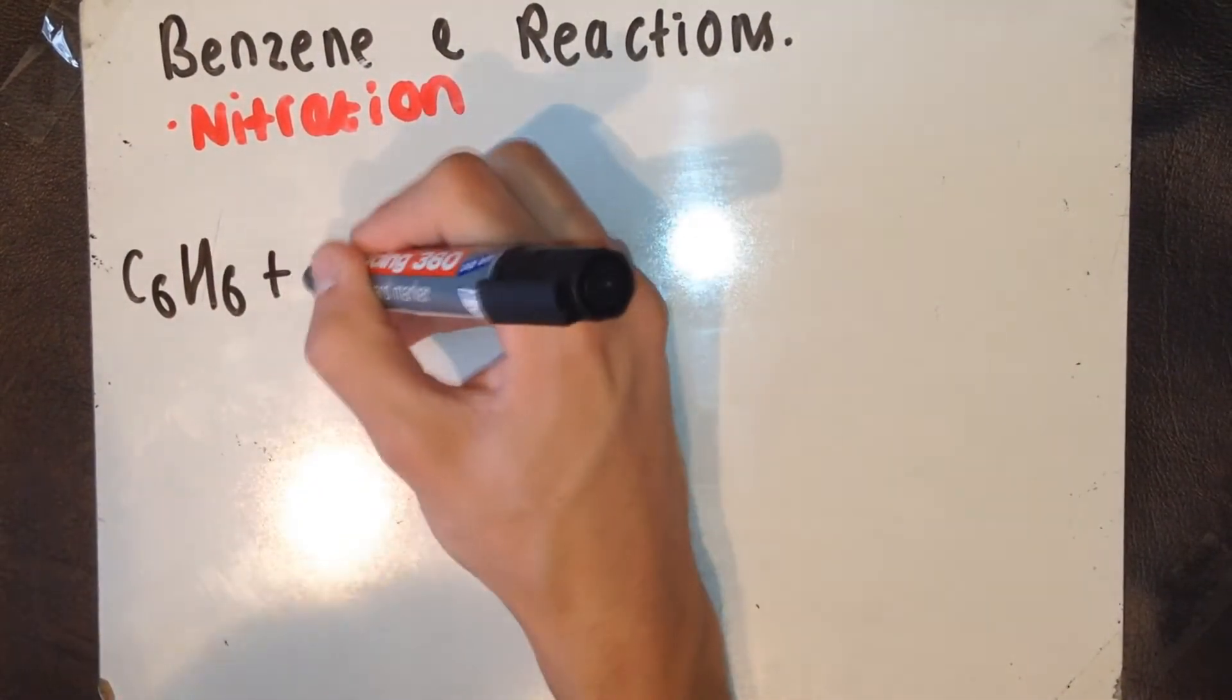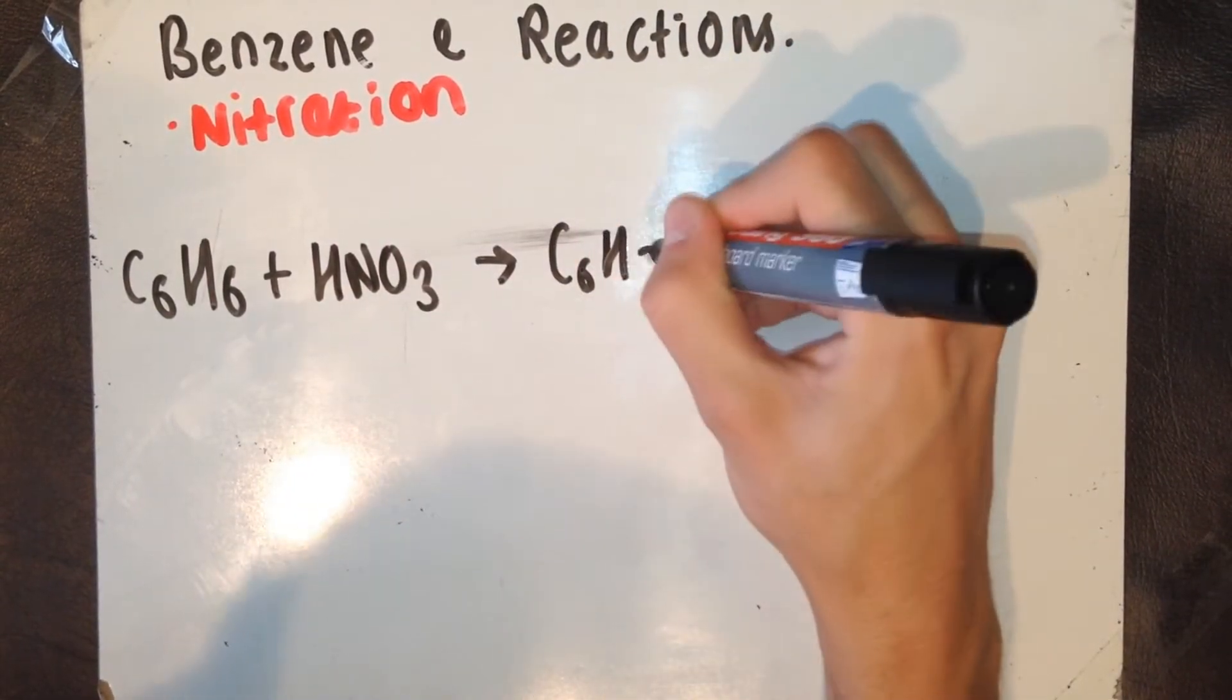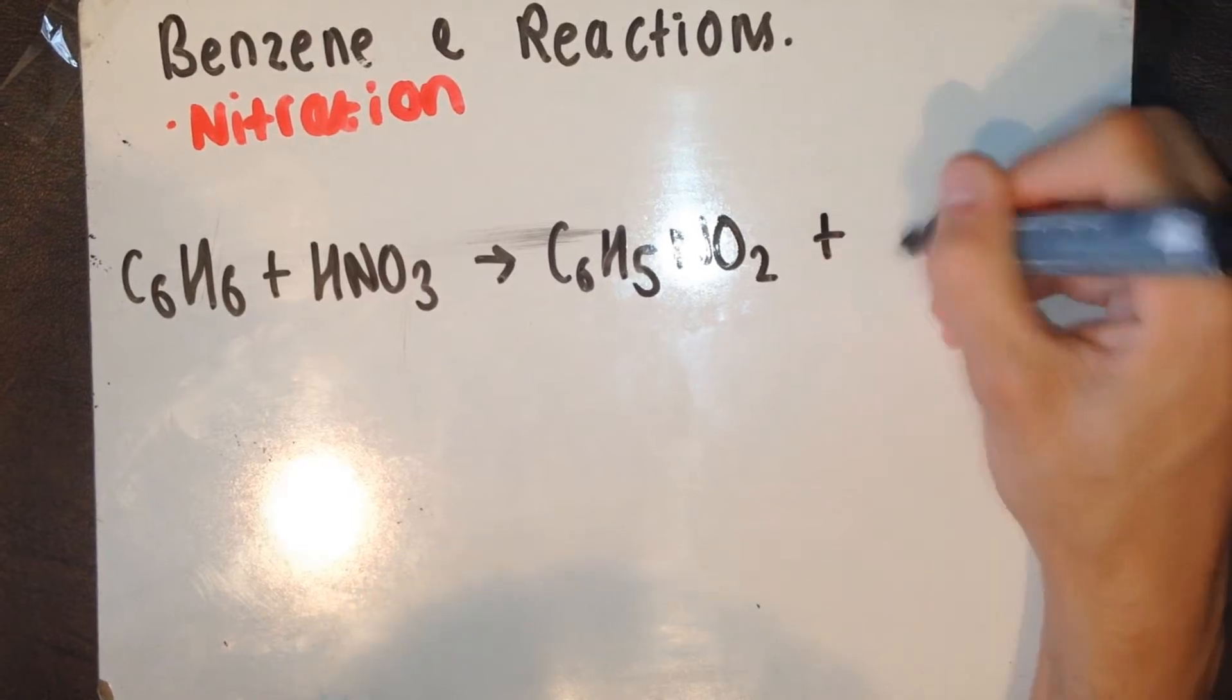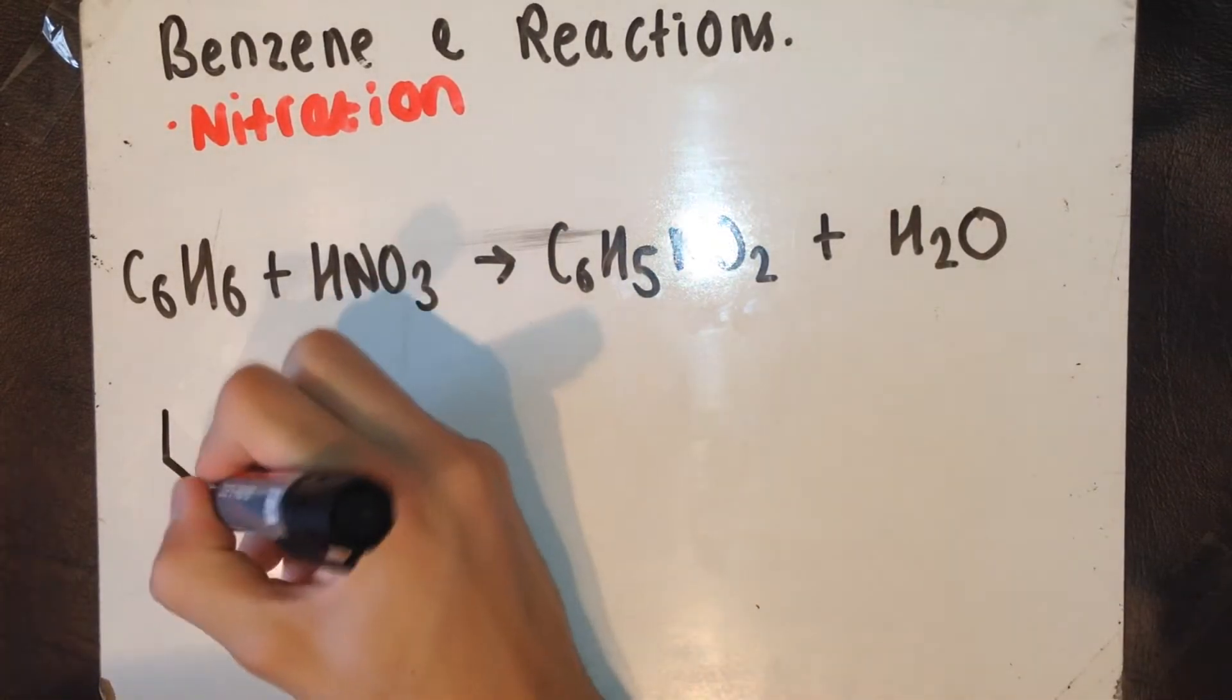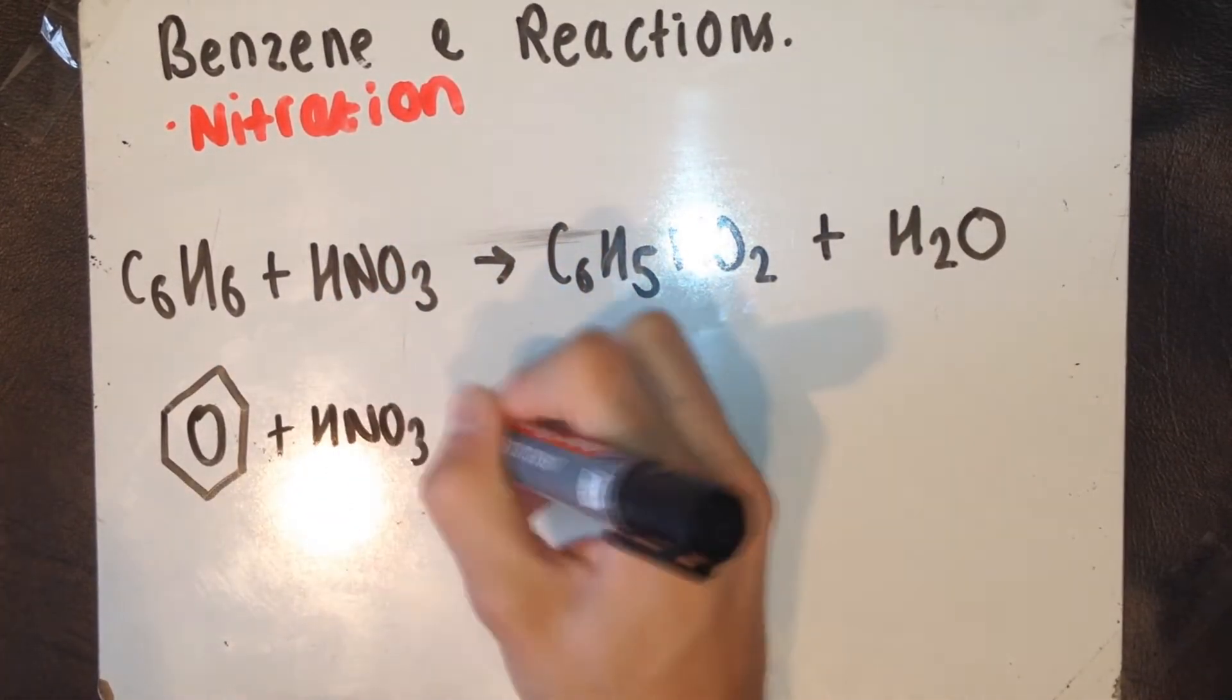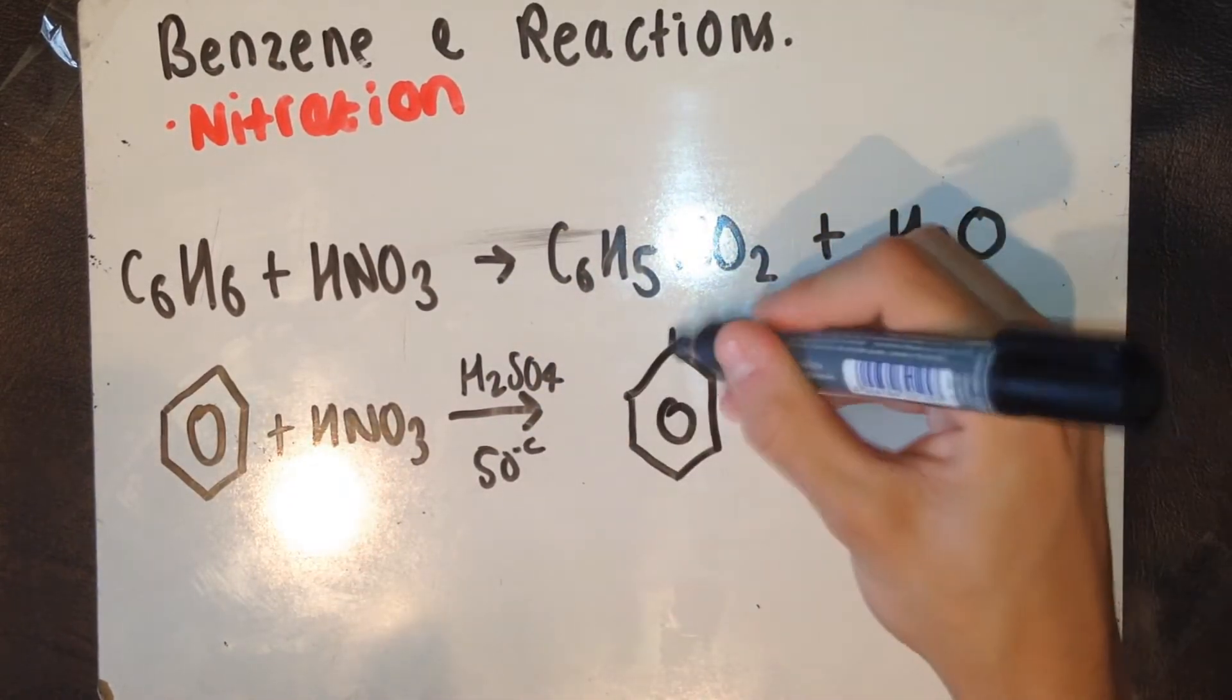The equation for the preparation of nitrobenzene is C6H6, benzene, plus HNO3, nitric acid, and this forms C6H5NO2, nitrobenzene, plus H2O, which is water. In the exam, it may be easier to draw the equation out like this. This should help you to remember that the NO2 actually replaces one of the hydrogen atoms.